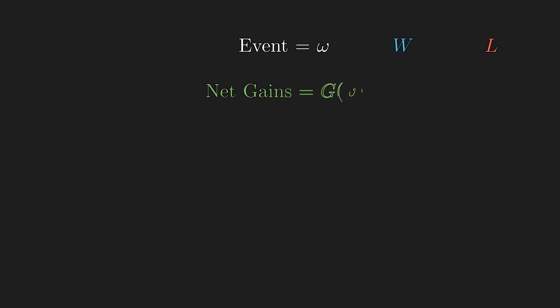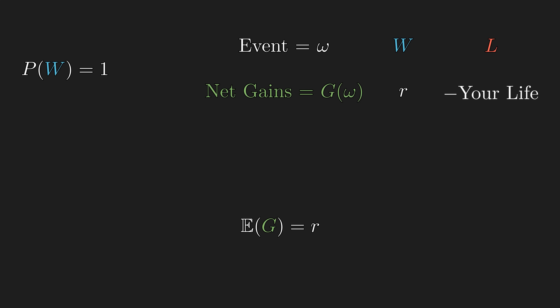Now consider a second game where if you win you double your betting amount, and suppose you have a 100% chance of winning. Since you are guaranteed to win, you are expected to double your money each time. Your long-term winning strategy is to put your entire life savings on each play. Even better, you can maximize profit by playing on margin — borrow the biggest amount possible and put all your assets, including your kidney and liver, as collateral.